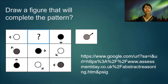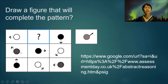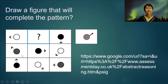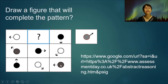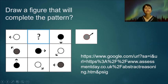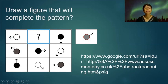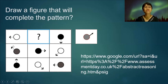Draw a figure that will complete the pattern. In row one there is a missing figure, so we observe rows two and three because they have a complete pattern. Let's observe the colors and shading of the circles — we have gray, black, and white; and in the third figure we have black, white, and gray. So we expect that the figure in the middle of the first row will be a gray circle.